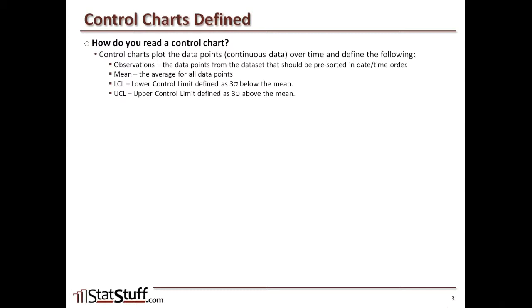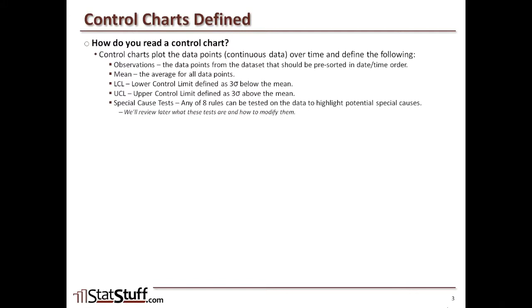These control limits are a little different than spec limits. The lower control limit reflects three standard deviations below the mean, and the upper control limit is three standard deviations above the mean. In Minitab, we typically have eight basic tests that are highlighted within the data to find certain special causes.